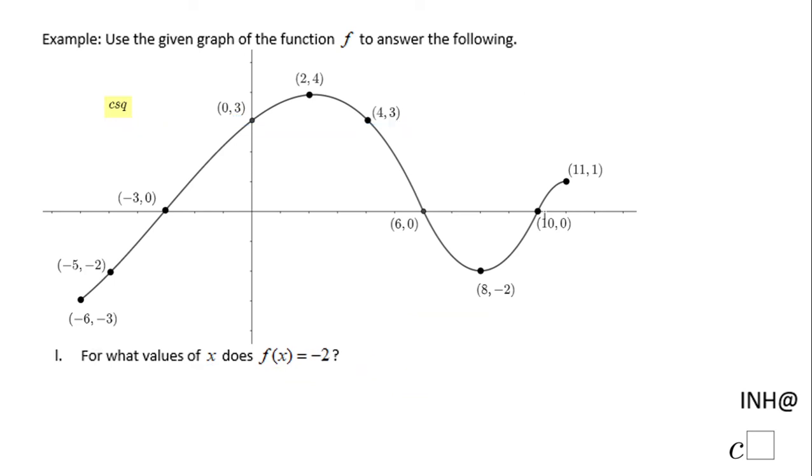Now we're going to move to the last part where we are asked for what value of x does f of x equal negative 2. So again we can take a look and notice negative 2 here and here, or we can draw a horizontal line that represents y equals negative 2, and we notice we have two intersection points. One when x is negative 5 and the second one when x is 8.